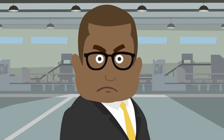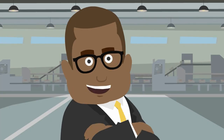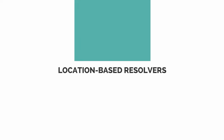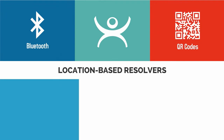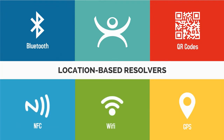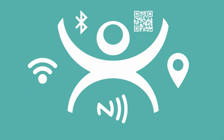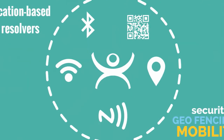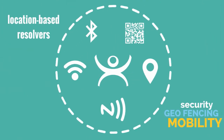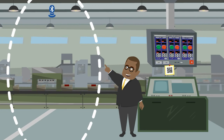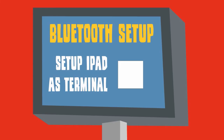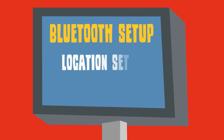Location-based resolvers within ThinManager can be set up using Bluetooth, QR codes, NFC, Wi-Fi, GPS, or any combination desired to create geofences for total security when integrating mobility into your production environment. Using a small Bluetooth beacon at the production line, Phil creates a fence around the line in which the iPad is allowed to function, then sets the iPad up in ThinManager as a terminal within that Bluetooth area.